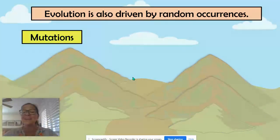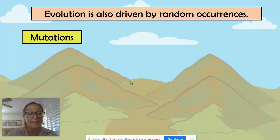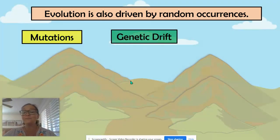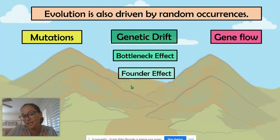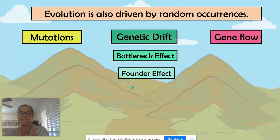We have mutations, which are random events that are constantly occurring. We have genetic drift and its two types. And then we have gene flow. We're going to talk about each of these.